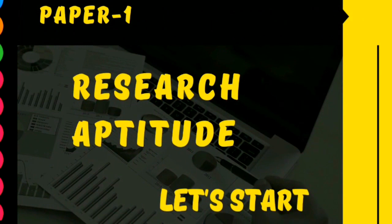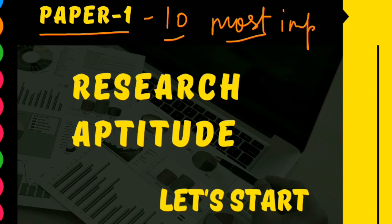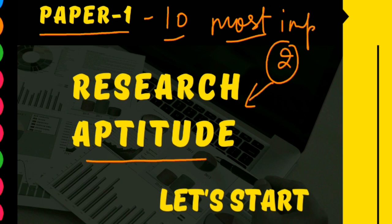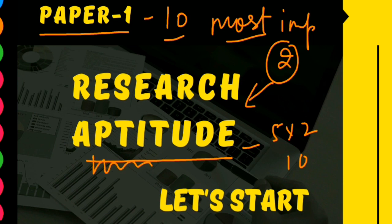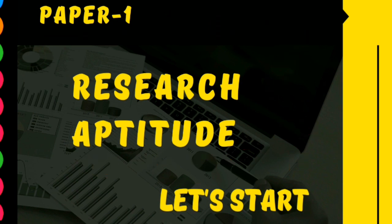Hello everyone, this is Shivani, welcome to the Education Icon. In this video we will discuss NTA NET Paper 1, which is a common paper for all. Paper 1 has a total of 10 units. We are starting our first video with the most important unit of Paper 1 — Unit Number 2, that is Research Aptitude. This unit covers 5 questions worth 10 marks. Some students find this unit quite difficult, and the reason is that research uses many terms whose meaning must be clear to us. That is why this is a very important and scoring unit. In this video we will cover the meaning of research, its definition, and features. Remaining topics will be discussed in future videos.